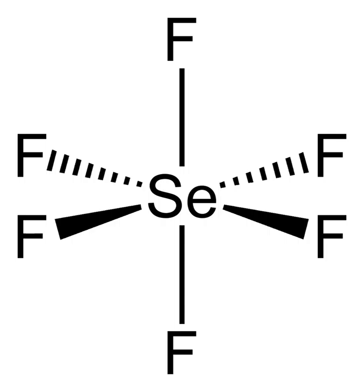Like many compounds of selenium, selenium hexafluoride is hypervalent. The compound has octahedral molecular geometry with an Se-F bond length of 168.8 pm. Selenium hexafluoride can be prepared from the elements or by the reaction of bromine trifluoride with selenium dioxide. The crude product is purified by sublimation.